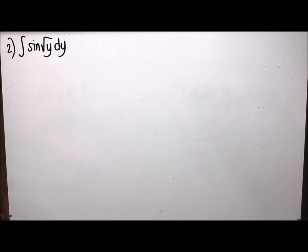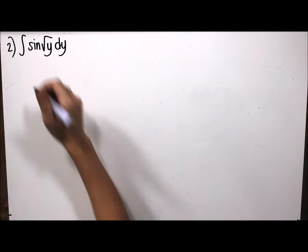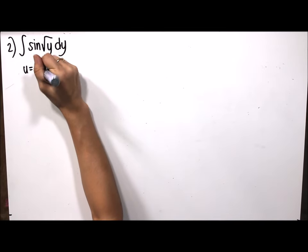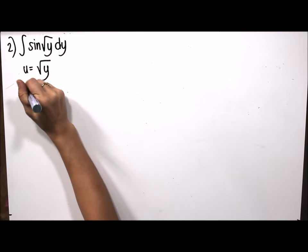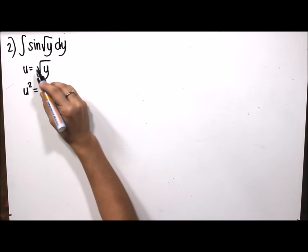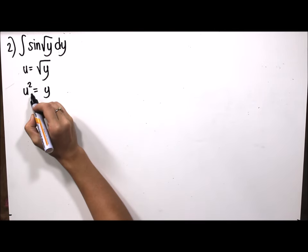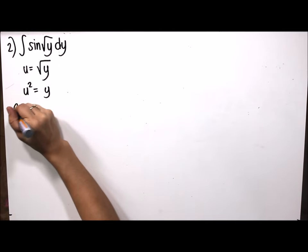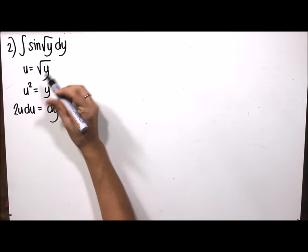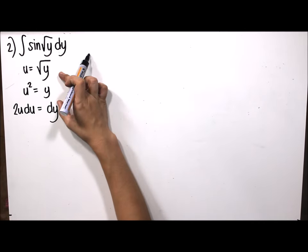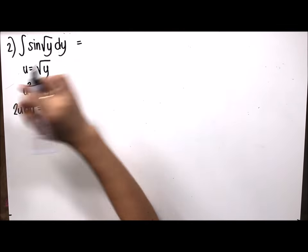Example number 2 for algebraic substitution: the integral of sine of the square root of y dy. We let u be equivalent to the radical expression square root of y, not including sine. Taking the square of both sides gives u squared equals y, and differentiating gives 2u du equals dy.